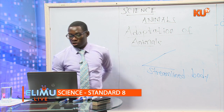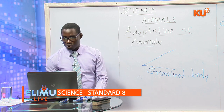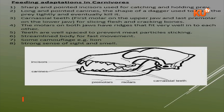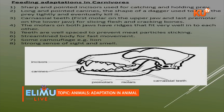Carnivorous animals also have a very strong sense of sight and smell. They can see a very far distance, notice prey, and be able to attack. Or they can also detect the smell of prey and attack. Those are the adaptations of carnivorous animals that enable them to survive and feed on flesh.